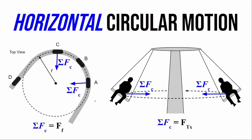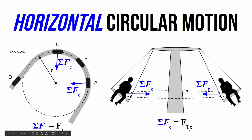Up until this point in class we've just talked about horizontal circular motion involving objects that follow a constant radius of curvature path in the horizontal plane. For instance, a car going around a turn or an amusement park ride where somebody's swinging around in a horizontal circular path at a constant radius. We know that in all cases of circular motion where the speed stays constant, the sum of the forces has to point towards the center of the circular path. For the car it's friction; for the amusement park ride it's the x-component of tension.